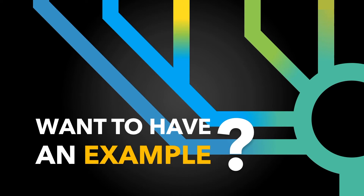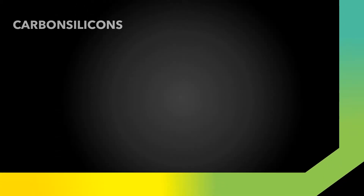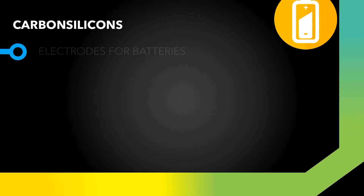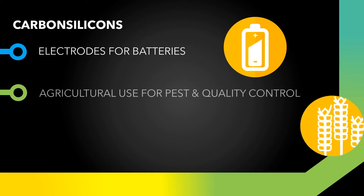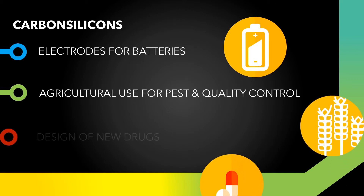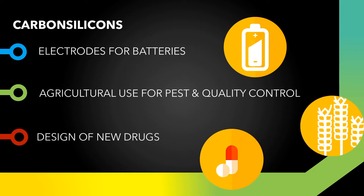So let me give you an example of what to use directed evolution for: carbon-silicon bonds. Carbon-silicon bonds are of great interest because they offer a whole range of applications. For instance, they can be used for electrodes in batteries or in agriculture. Most importantly, as a carbon isostere, silicon can be used to design new drugs that are less toxic, easier to ingest and more stable.